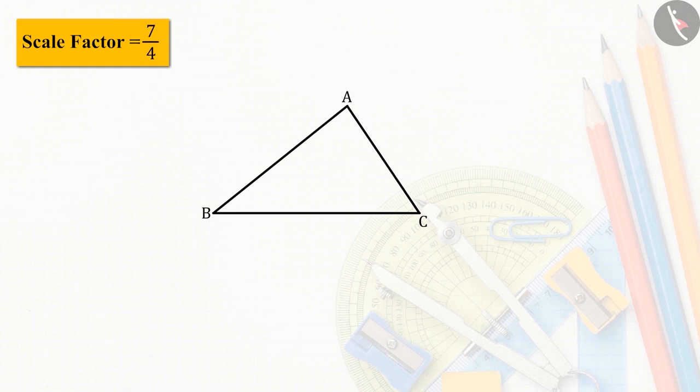At first, from the triangle base BC, on the opposite side of vertex A, an acute angle is drawn as shown.